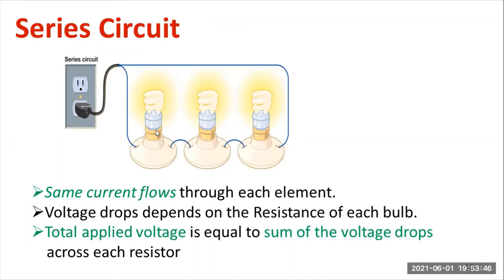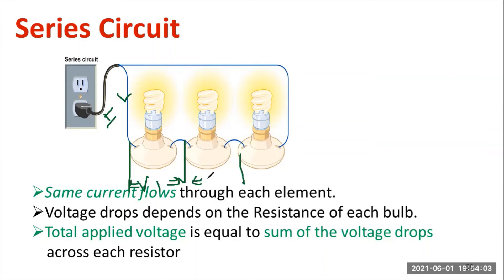You can observe that CFL lamps are connected in serial fashion. The same current is flowing through each and every lamp, but the voltage will be different. This voltage may be V1, the voltage across CFL lamp 2 will be V2, because it depends on the resistance of the lamp. This will be V3.